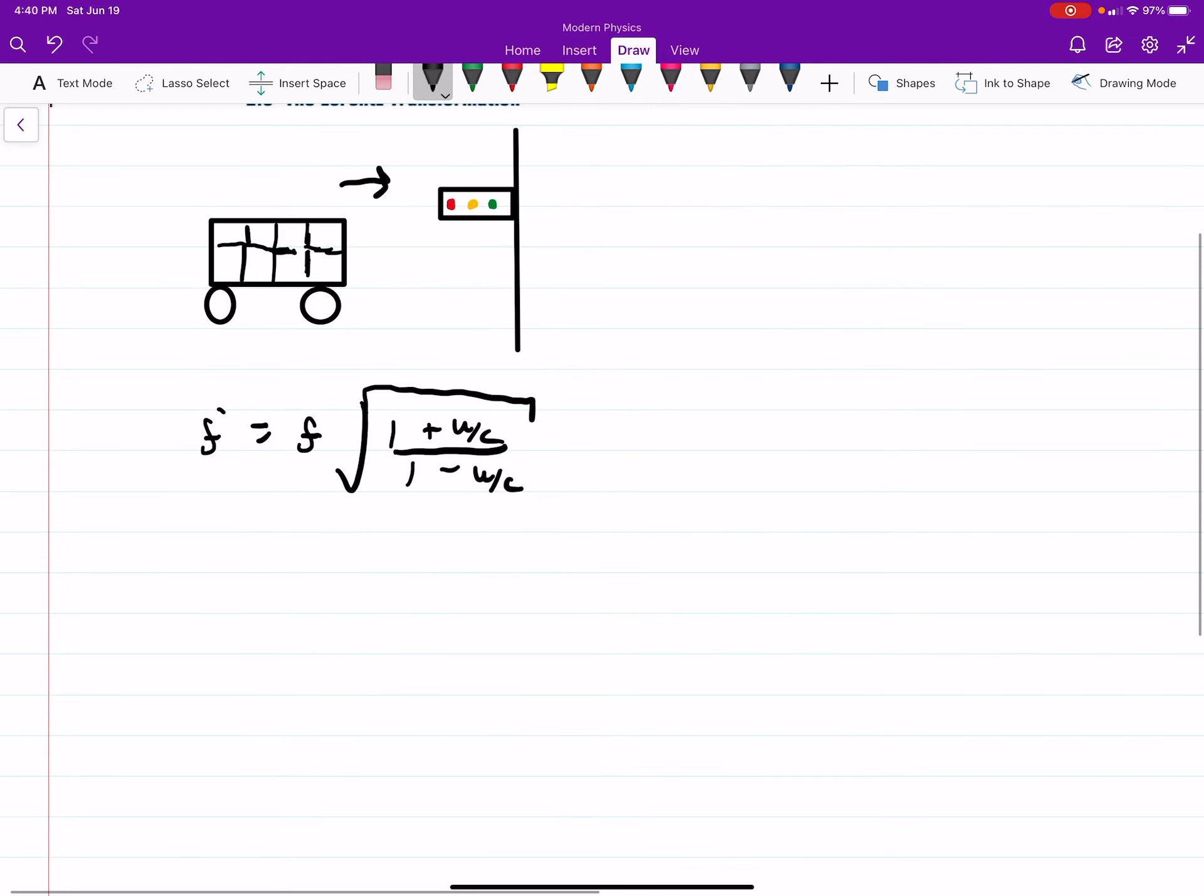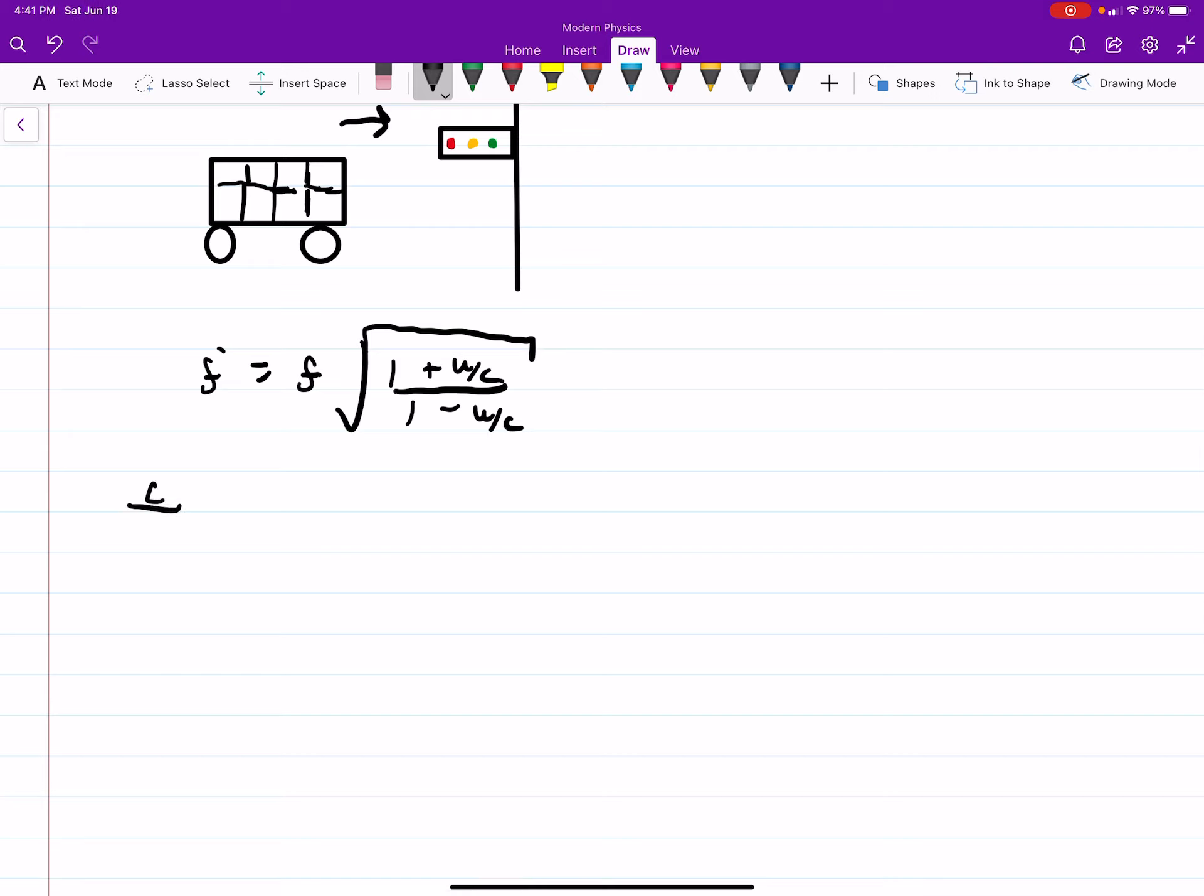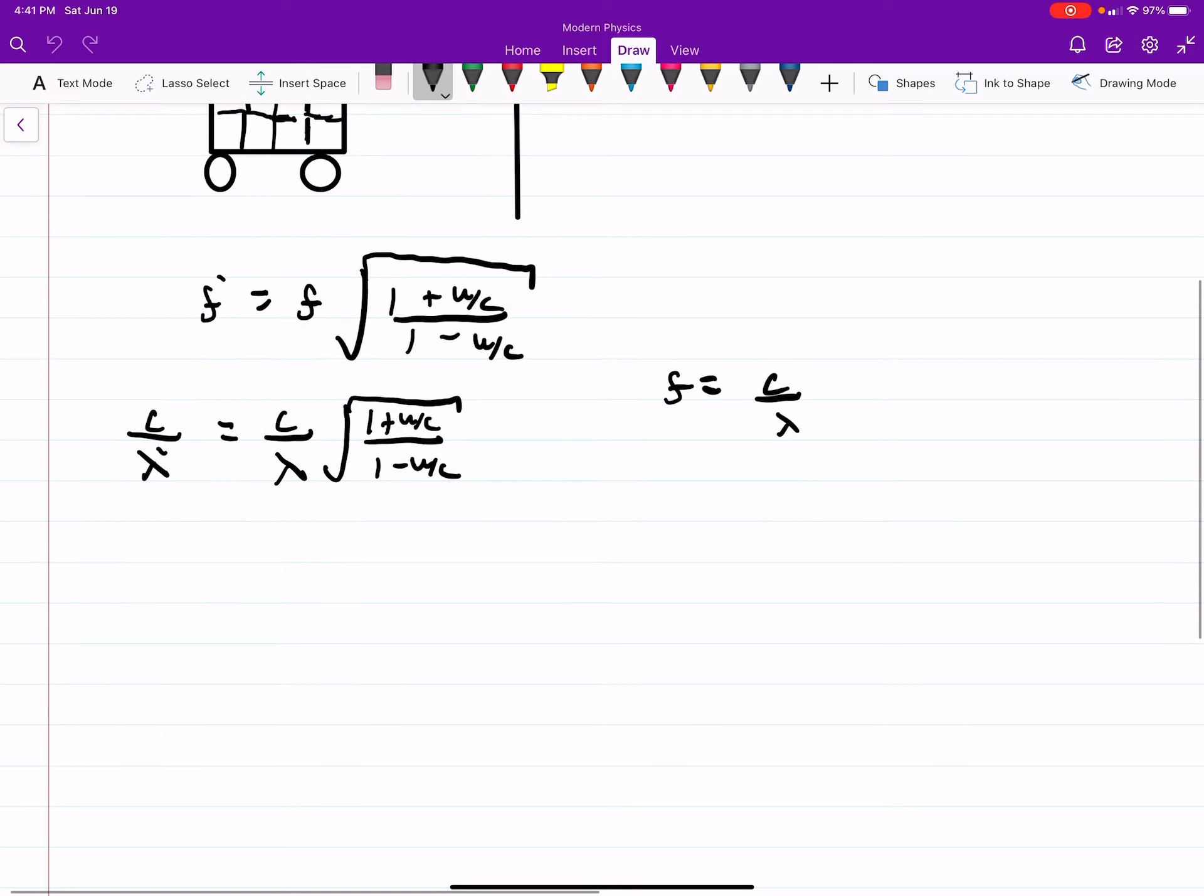The next thing to do is just note that you can rewrite your frequency as c over lambda. So c over lambda prime equals c over lambda, the square root, just as we had before. Okay, so that's just using the fact that frequency for electromagnetic waves is c over lambda. So the c's can divide out.